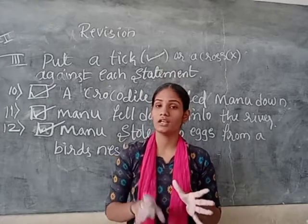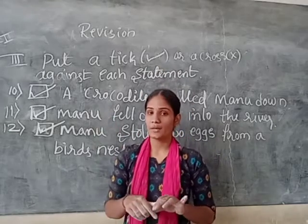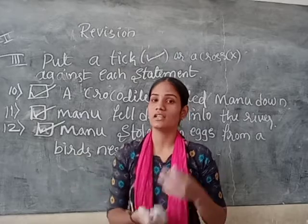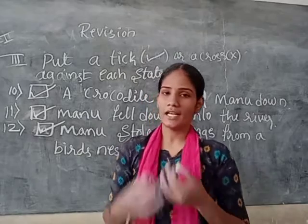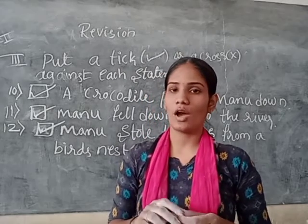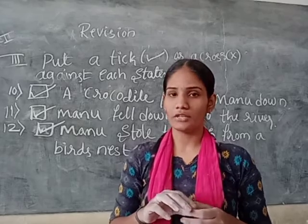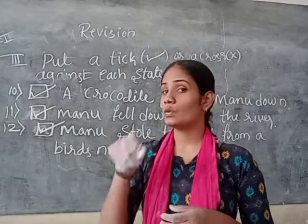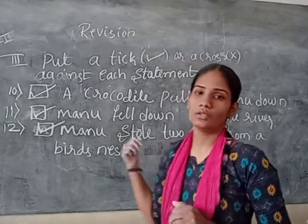So you have to tick right or wrong by observing the sentence. Is it correct or wrong? If the given sentence is right, you have to tick it right. If the given sentence is wrong, you have to make the cross mark.